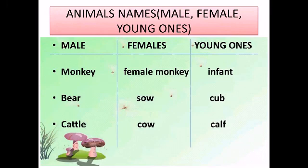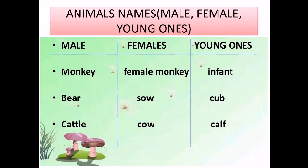Next is monkey — female: monkey, young: infant. Next is bear — male: boar, young: cub. Next is cattle — female: cow.